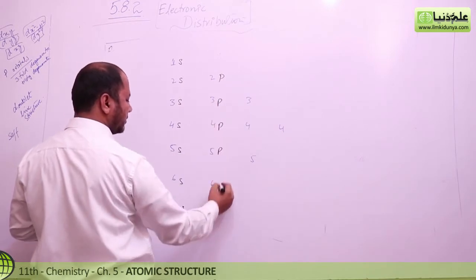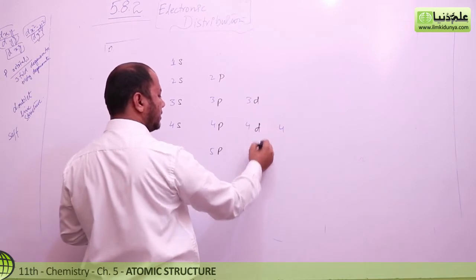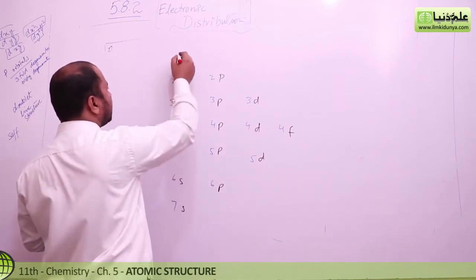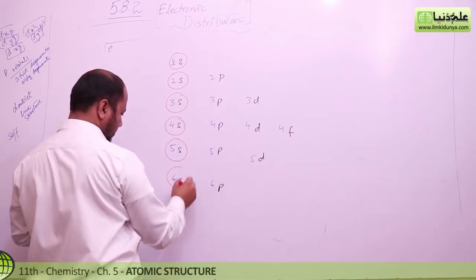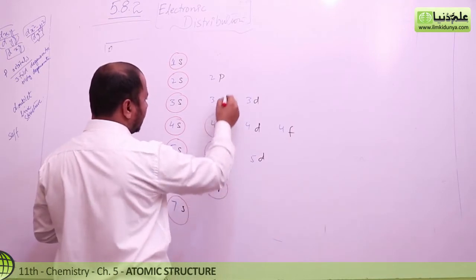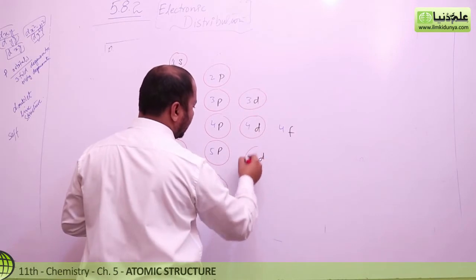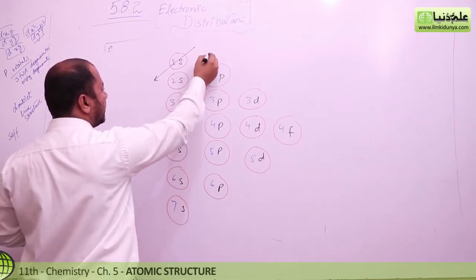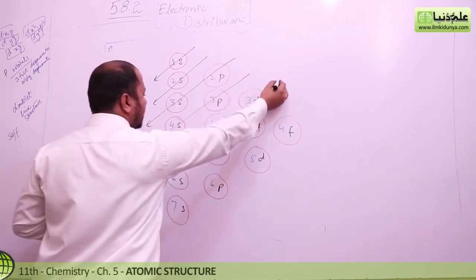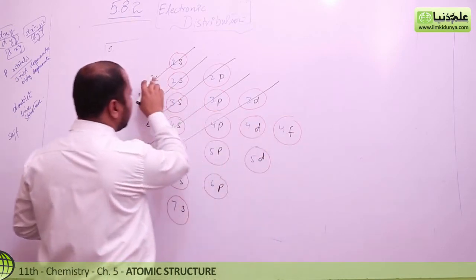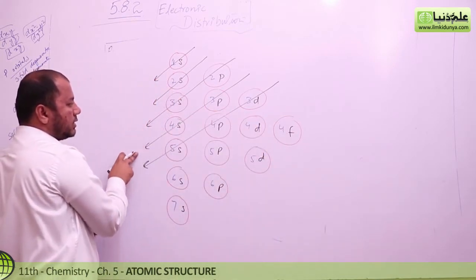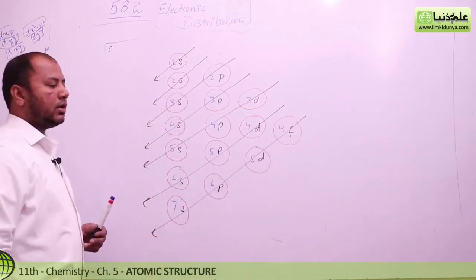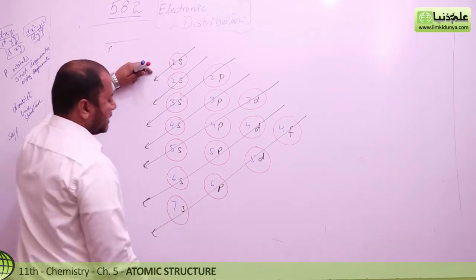The table includes s, p, 3d, and f orbitals. Now I am drawing the cutting lines — this cutting is very specific, so students must be careful here. If you make mistakes in the cutting, it will be difficult to do it properly. The cutting is a very important part. From the tail towards the head, you set the orbitals: 1s has one orbital, 2s has one orbital, 2p has three orbitals, 3s has one, 3p has three, and so on.